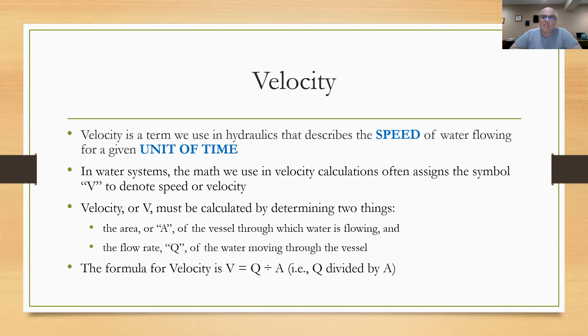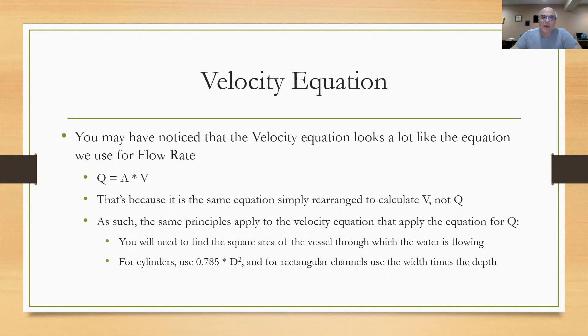The area, or A, of the vessel through which the water is flowing, and of course the flow rate, or Q. And we did that in a previous video. So to determine the speed at which water is moving through our systems from point A to point B, we need to know the size of the vessel, the pipe or tank it's flowing through, and the amount of water per unit of time. The formula for velocity then is V equals Q over A, or Q divided by A.